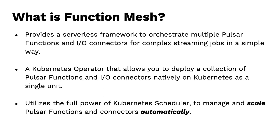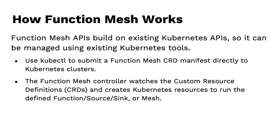Pulsar functions can sense via metrics that they're using a lot of CPU or memory and need to spin up more instances — we'll see how that happens automatically. Function Mesh is a Kubernetes operator that makes this possible. You submit a CRD using kubectl to define your function mesh layout. You can hook this into ArgoCD and other development pipelines so that when you update your function code and check it back in, ArgoCD deploys it to your Kubernetes environment. It also supports IO connector sources and sinks — for example, a Debezium CDC connector or syncing to an S3 bucket.